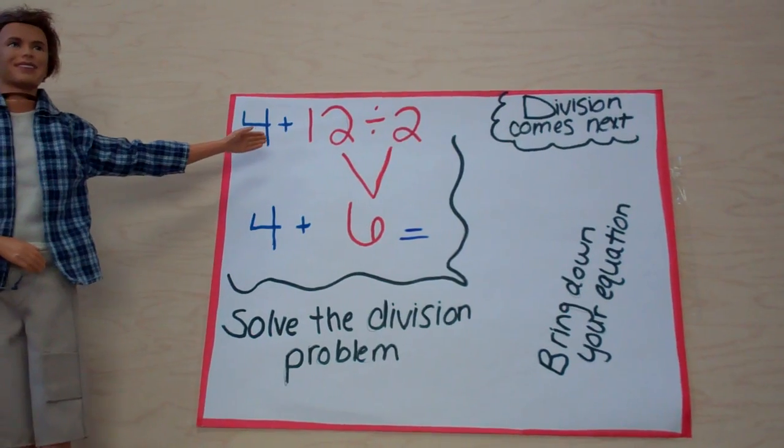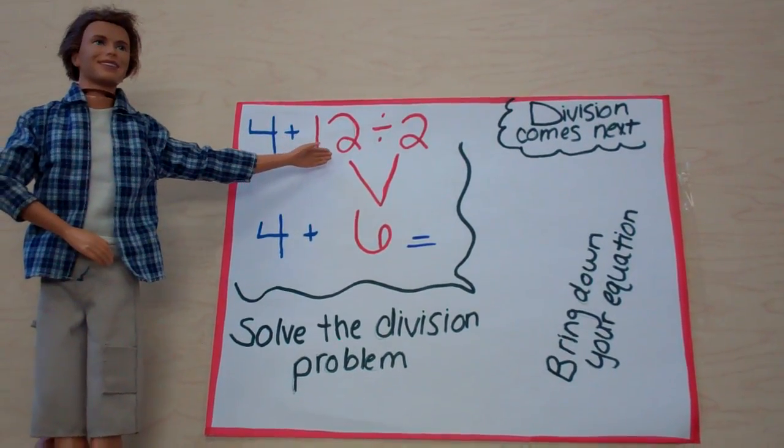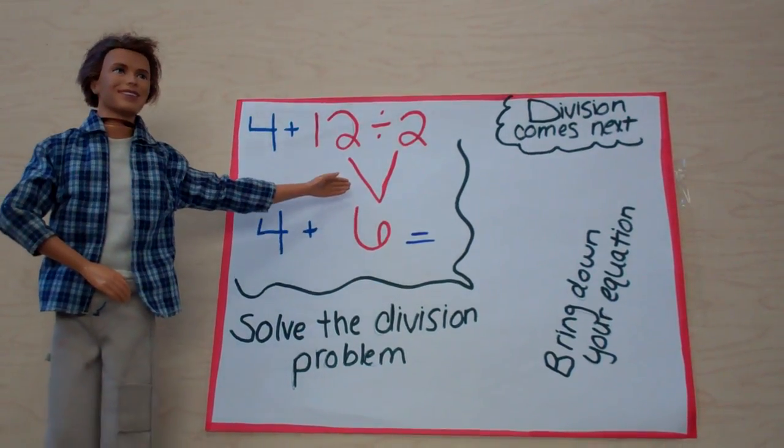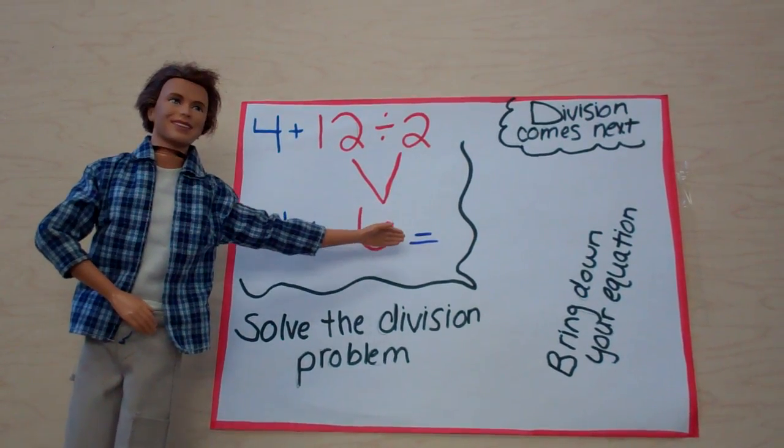Division comes next. 12 divided by 2 is 6. Bring down your equation.